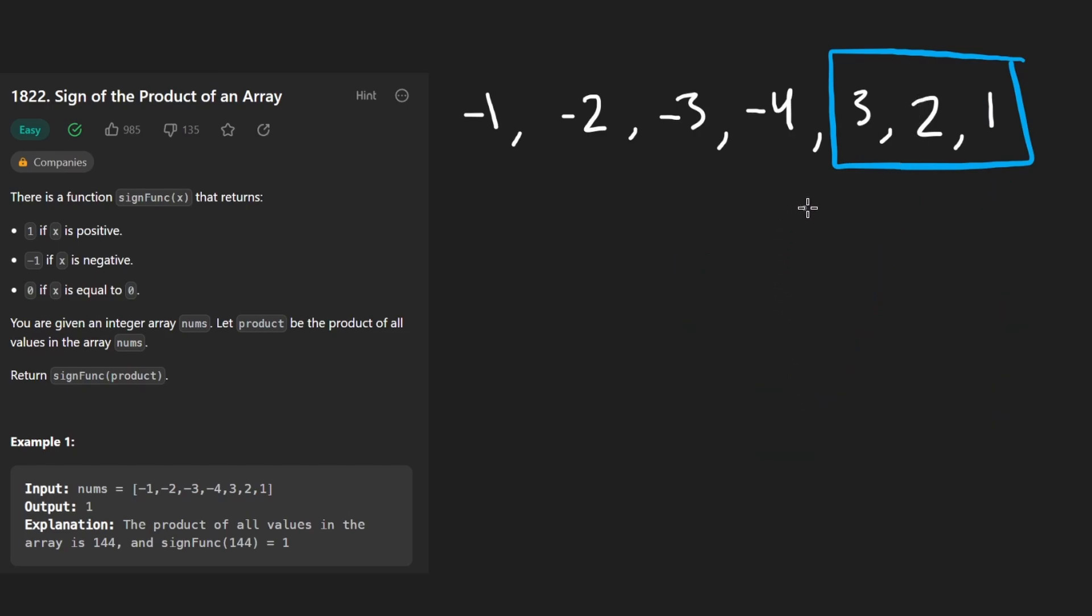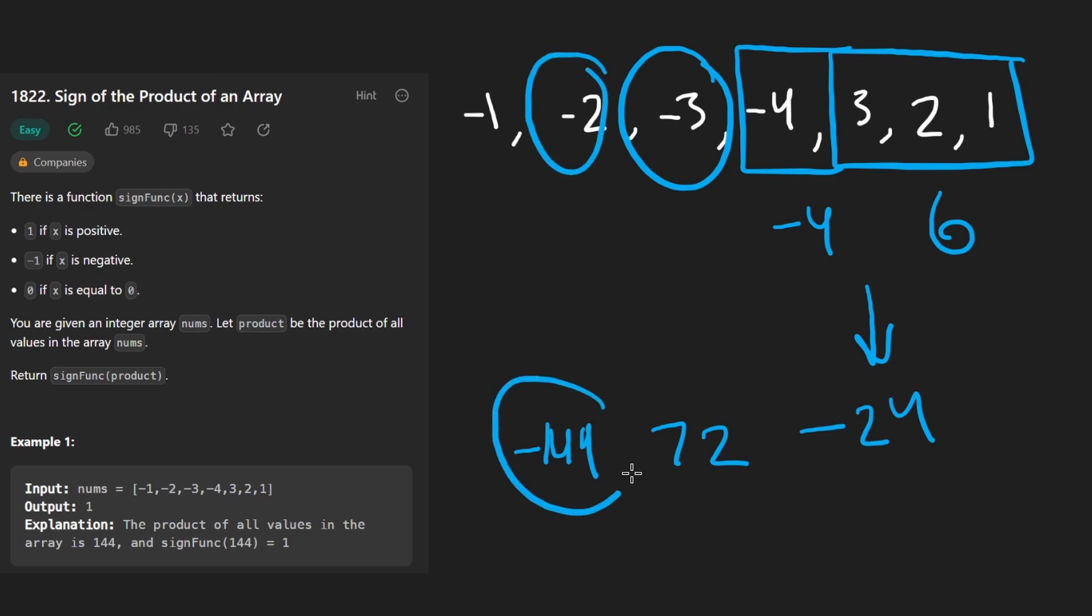Now, when we introduce a negative number like negative 4, and let's assume that we got rid of the zero, this product is going to be 6. Multiplying it by negative 4 is going to make it negative 24. Multiplying it by another negative number is going to make it positive 72. Multiplying it by another negative number is going to make it negative 144. So with each negative number, we kind of are alternating sign. This negative 1 is going to make this a positive number now.